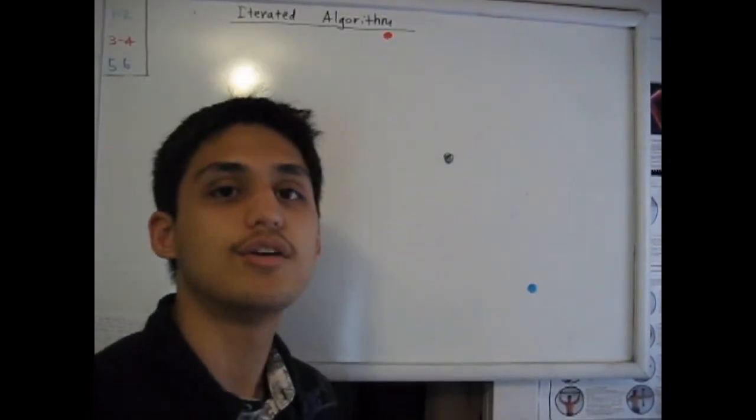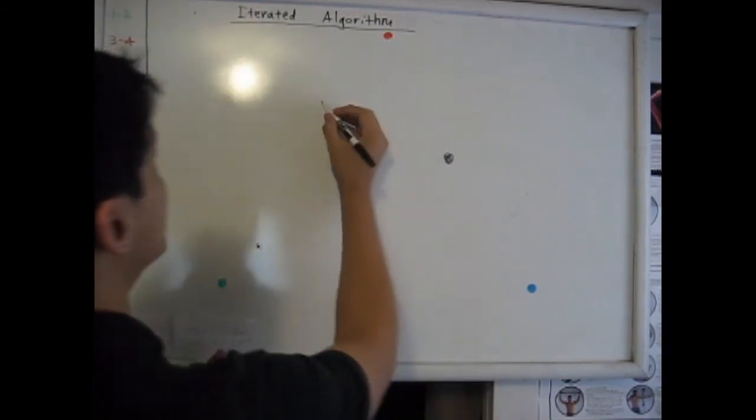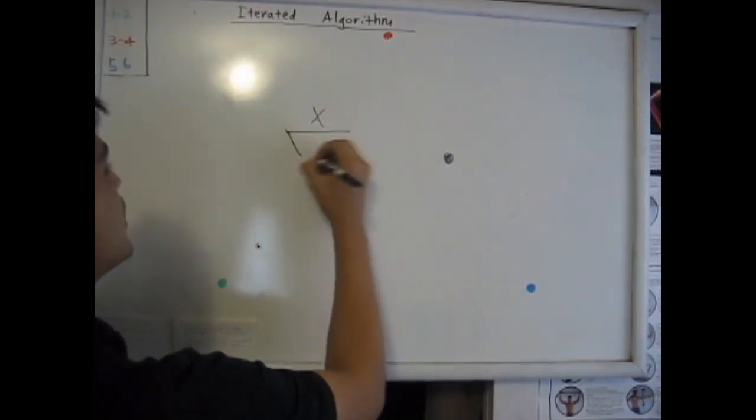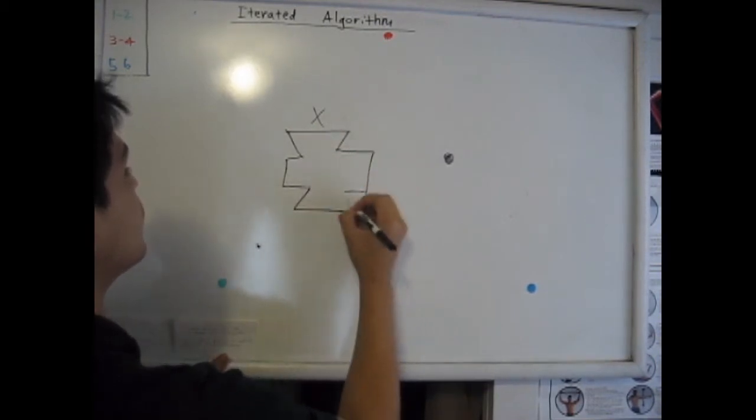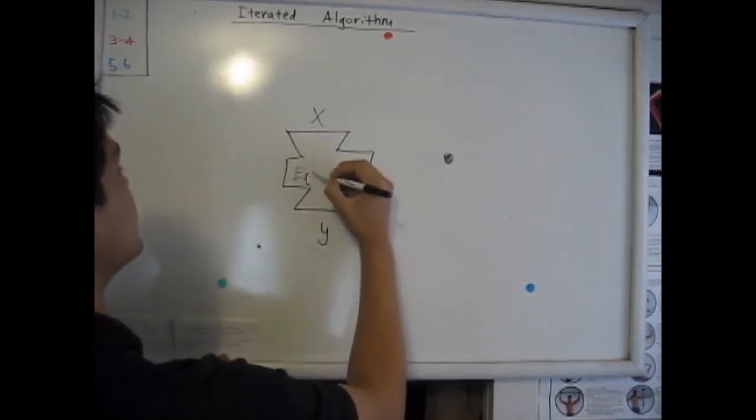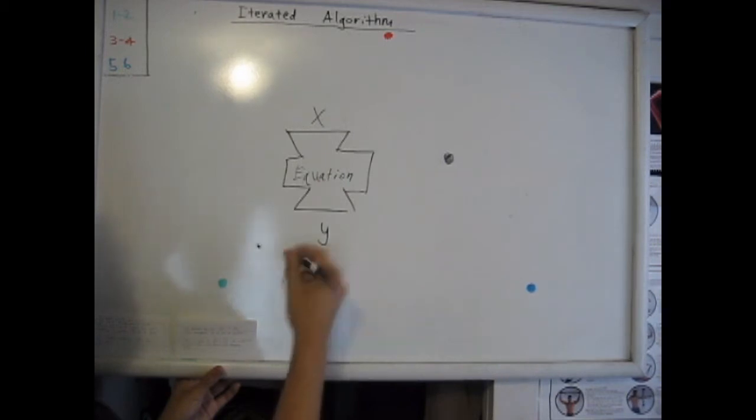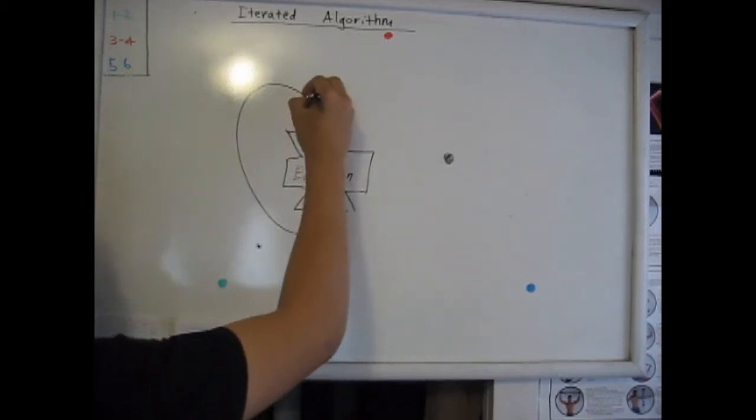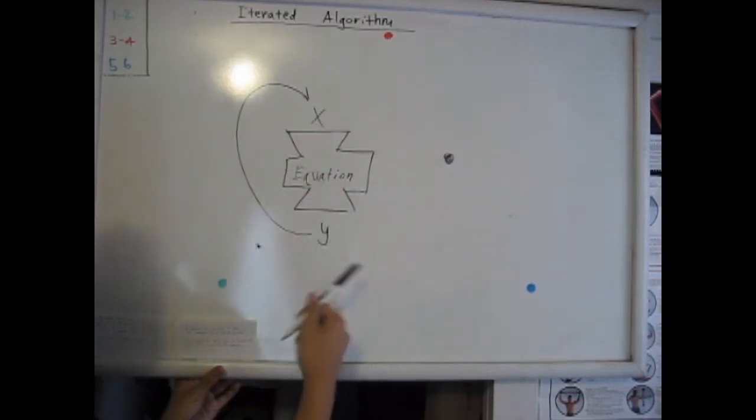So the idea behind that iterated algorithm is much like the things we've learned in math. For every X that you put into an equation, you're going to have to come out with only one Y. So here's our equation. This is our machine. For every X we put, get a Y out. But for an iterated algorithm, you're going to have to put that Y and feed it back into the machine, making a new set of numbers.